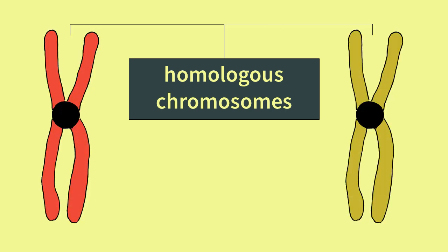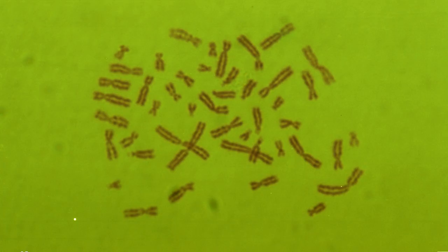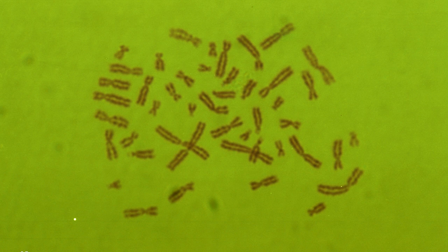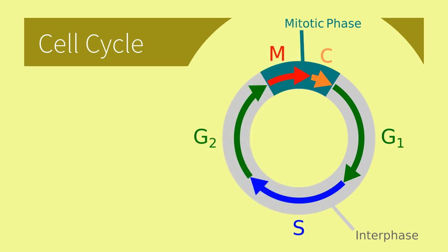The replicated arms of a chromosome are called sister chromatids. The centromere is the part of the chromosome where the sister chromatids are joined. You can see the sister chromatids in this karyotype, where each chromosome has two visible arms. So how and when do chromosomes become replicated?